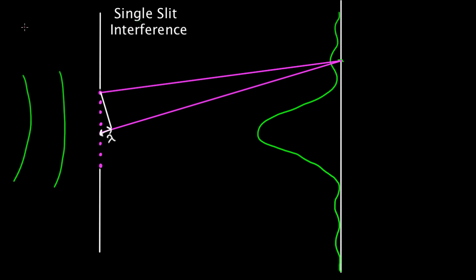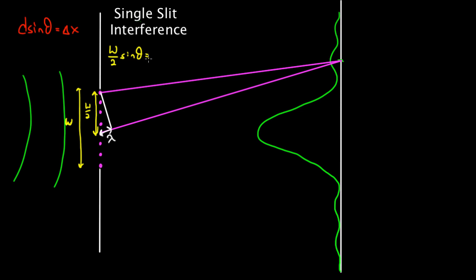What's the relationship? Remember the relationship for the path length difference and theta — the angle that it's at — was just d·sinθ. D is the whole width of the slit, which is w. The width between this source of light and this source would be w/2. So d = w/2 times sinθ would equal, for this first point, lambda. That gives me w·sinθ = 2λ as a constructive point.